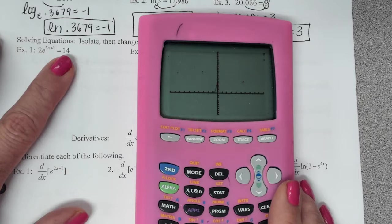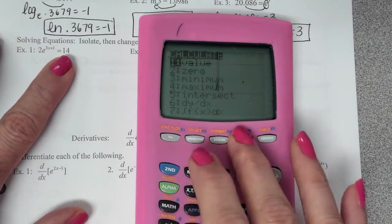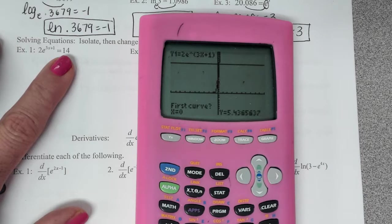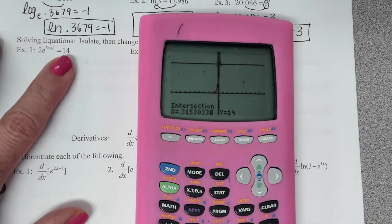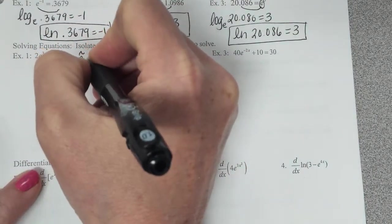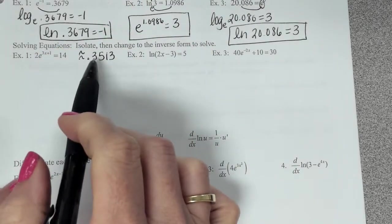So here's my exponential function. It's really steep there. And so now, if I want to solve this equation, I can do second, trace, calculate, and I just want to get that point of intersection, and I do enter, enter, enter. And I get an answer of 0.3153.